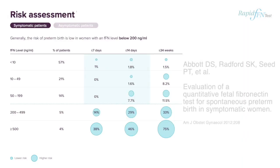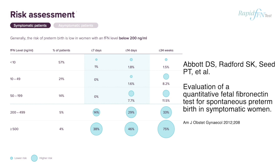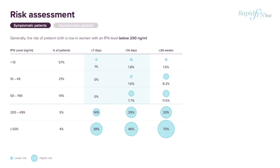Using data from the following study, you can see the stratification of preterm birth risk by fetal fibronectin concentration at under and equal to seven days, under and equal to 14 days, and under 34 weeks. You may notice that the risk of delivery in under seven days at 49 nanograms per milliliter is as low as it is at 199 nanograms per milliliter. These quantifications allow you to be much more specific about the pathway for each individual patient, not just imminently, but later in her pregnancy.